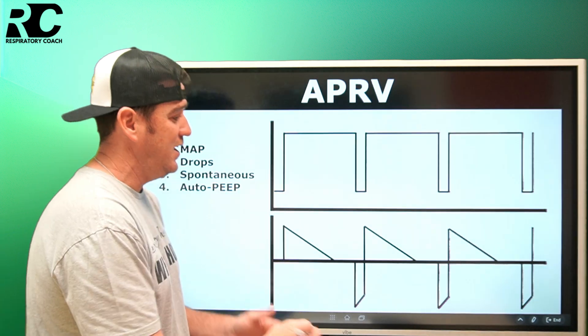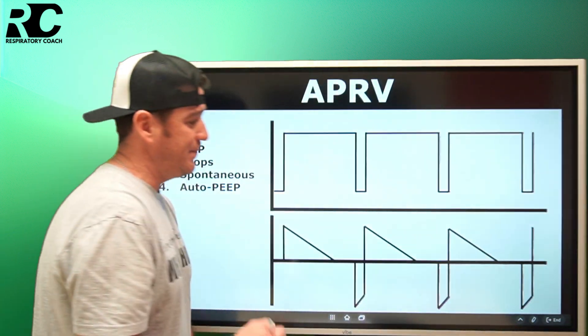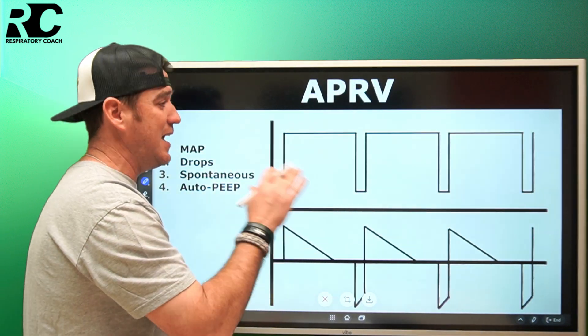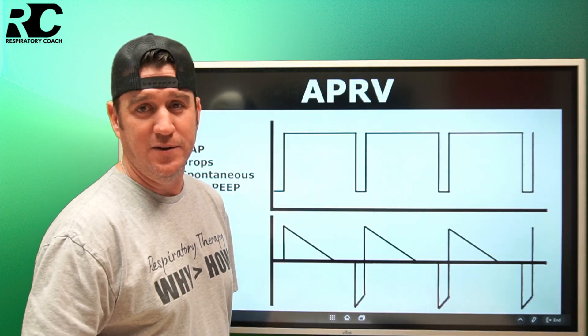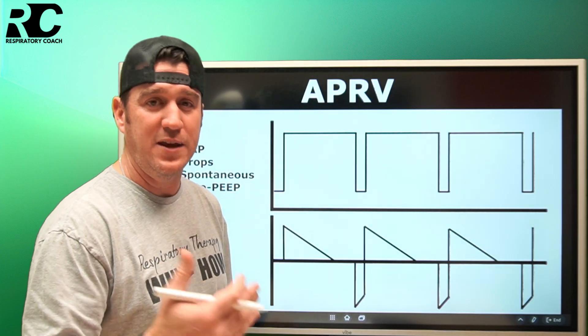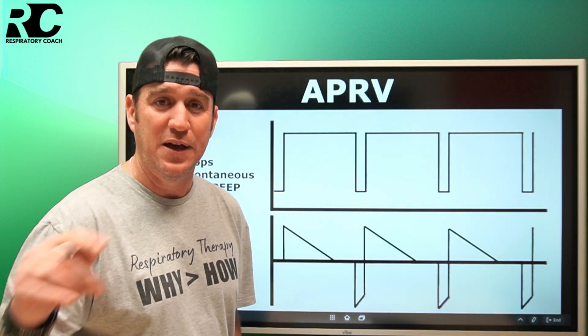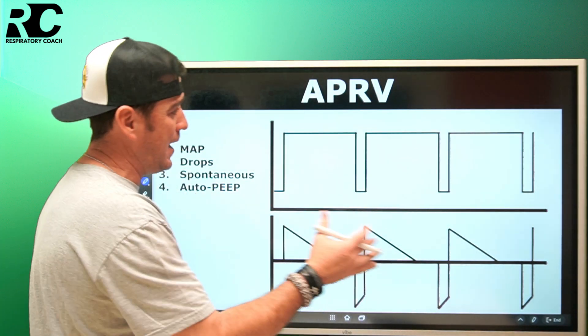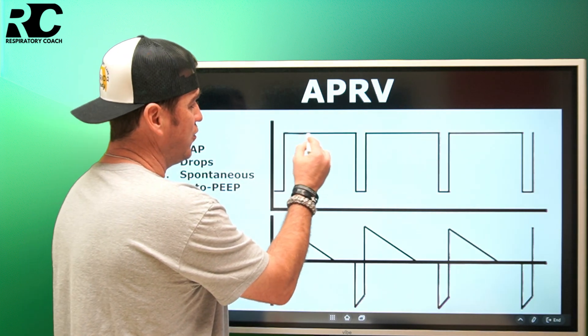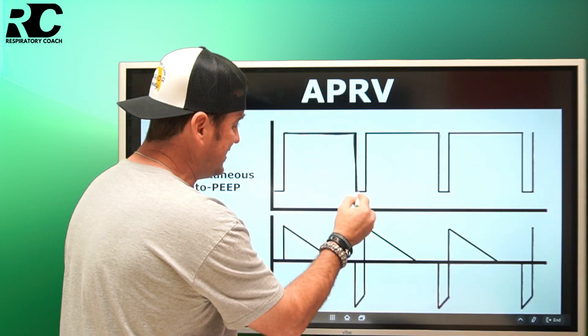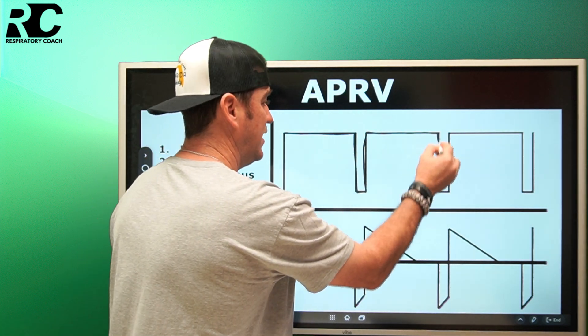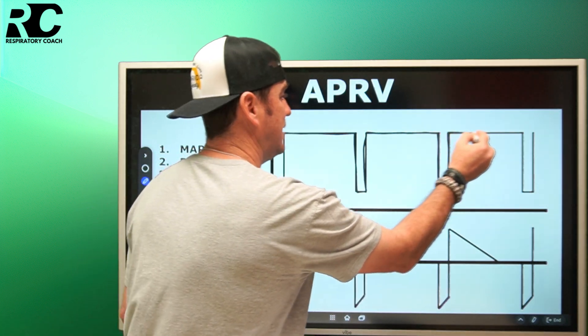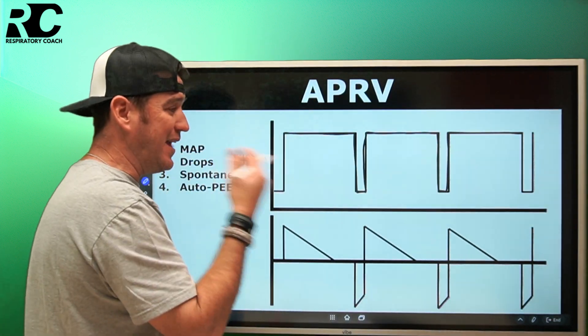When we get into APRV, what we see is that it looks something like this. APRV stands for airway pressure release ventilation, and that's exactly what happens. You can see here we hold a pressure and then we release for a short amount of time and we come right back up and hold, release, right back up and hold. That's where the name comes from - airway pressure release ventilation.